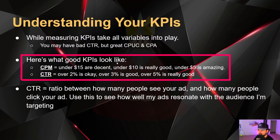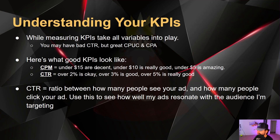Here's what good KPIs look like in my opinion. For CPM, under $15 is decent at the beginning. Under $10 starts to get pretty good, and if you can get your CPM under $5, that's amazing — you're probably going to be really profitable.